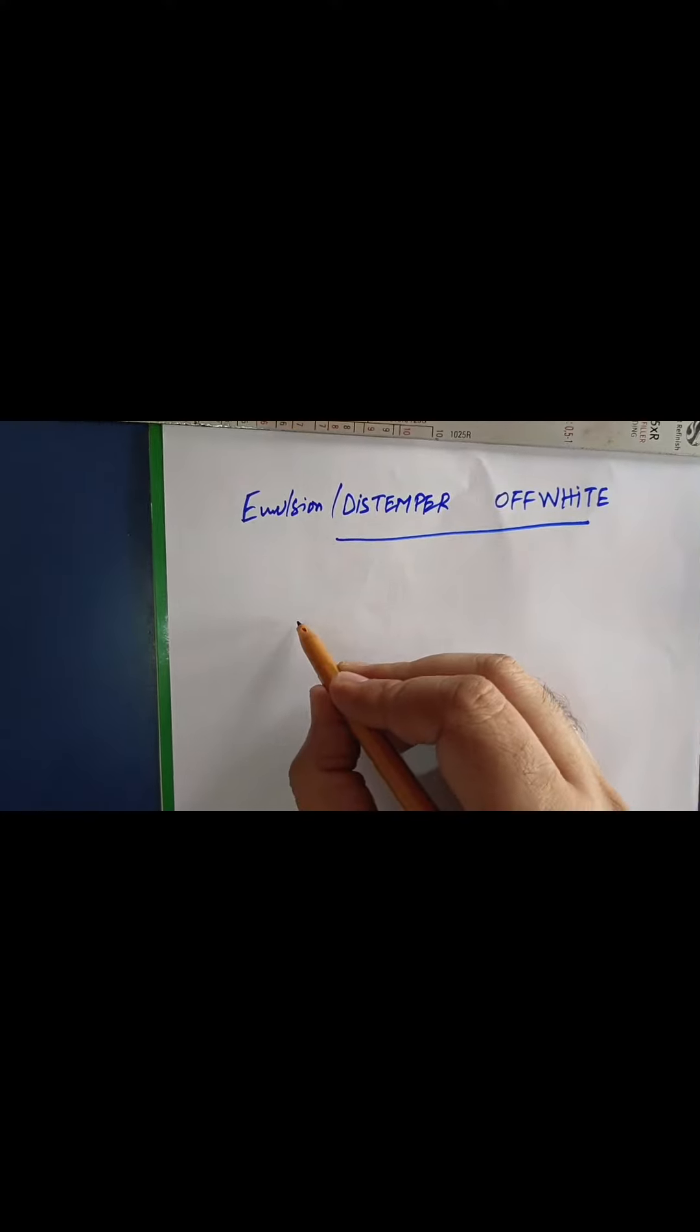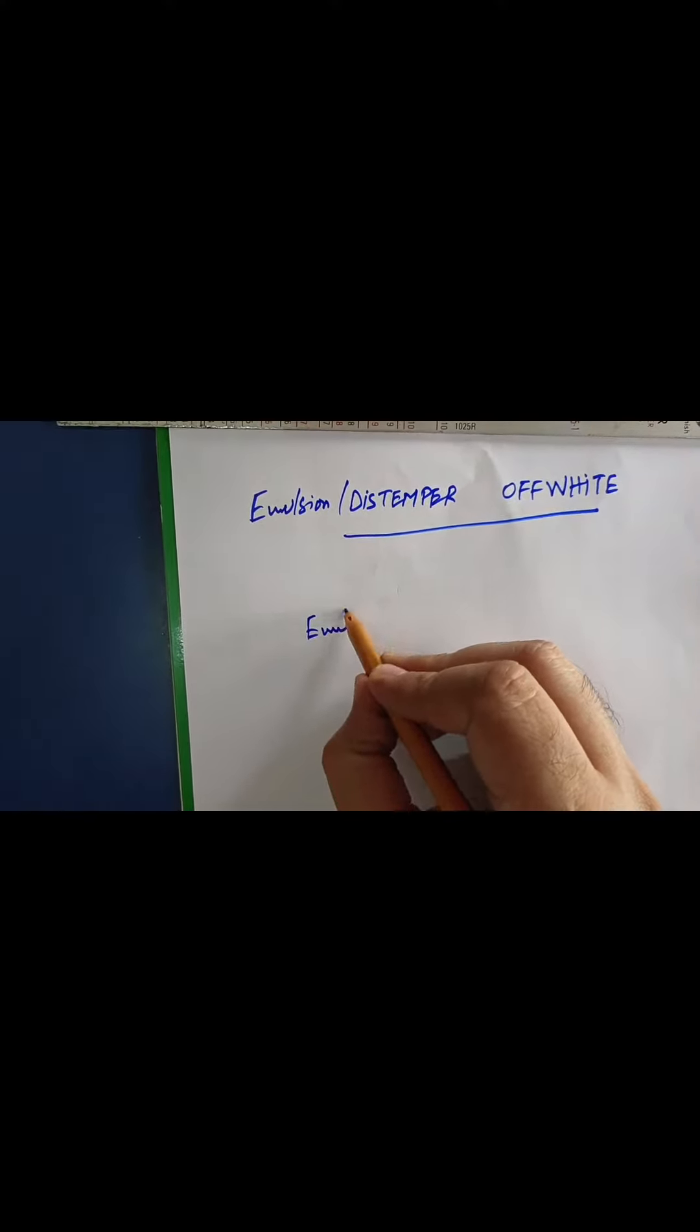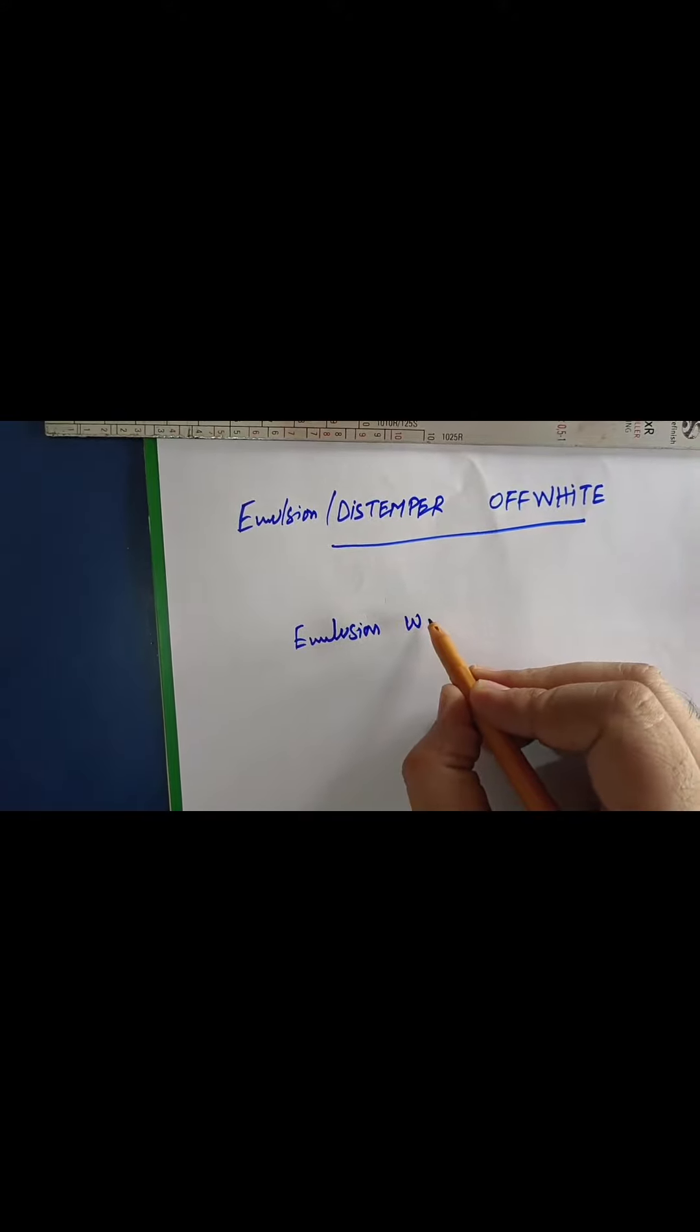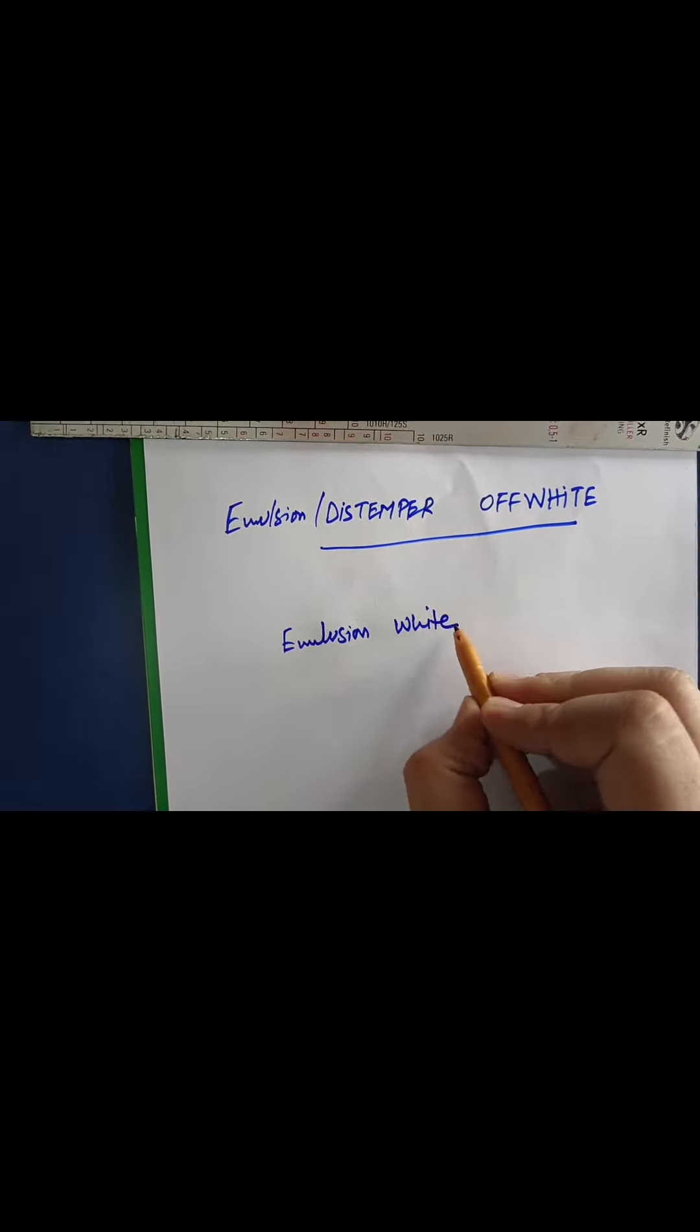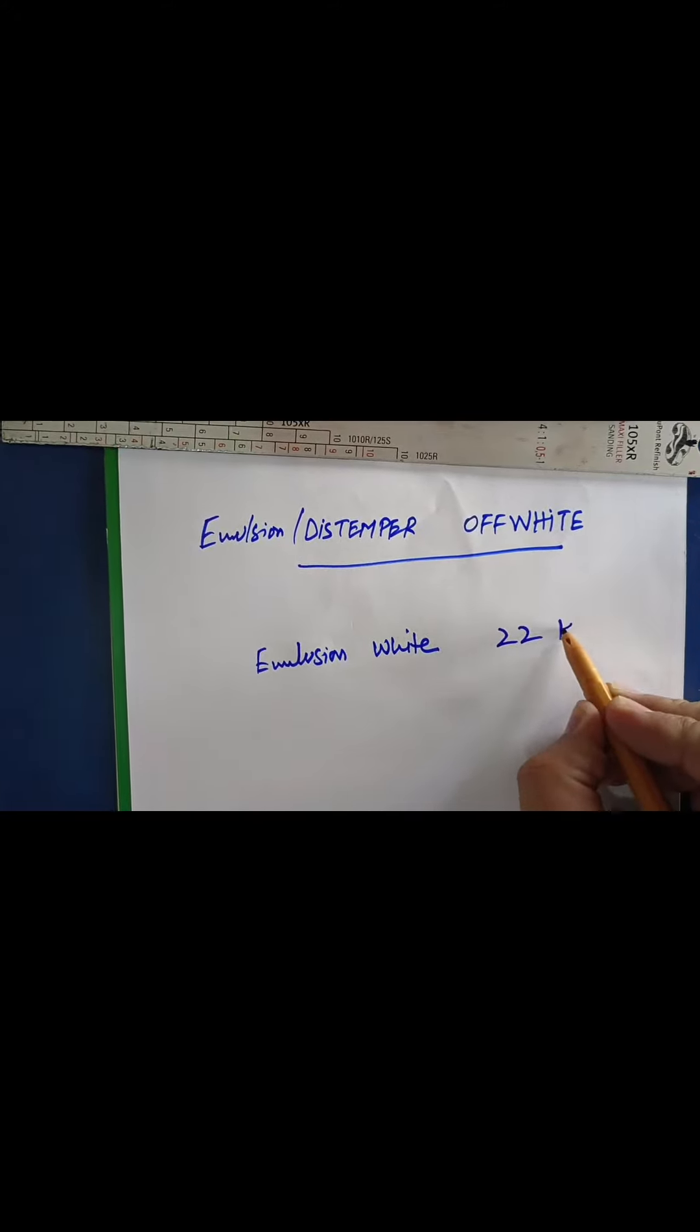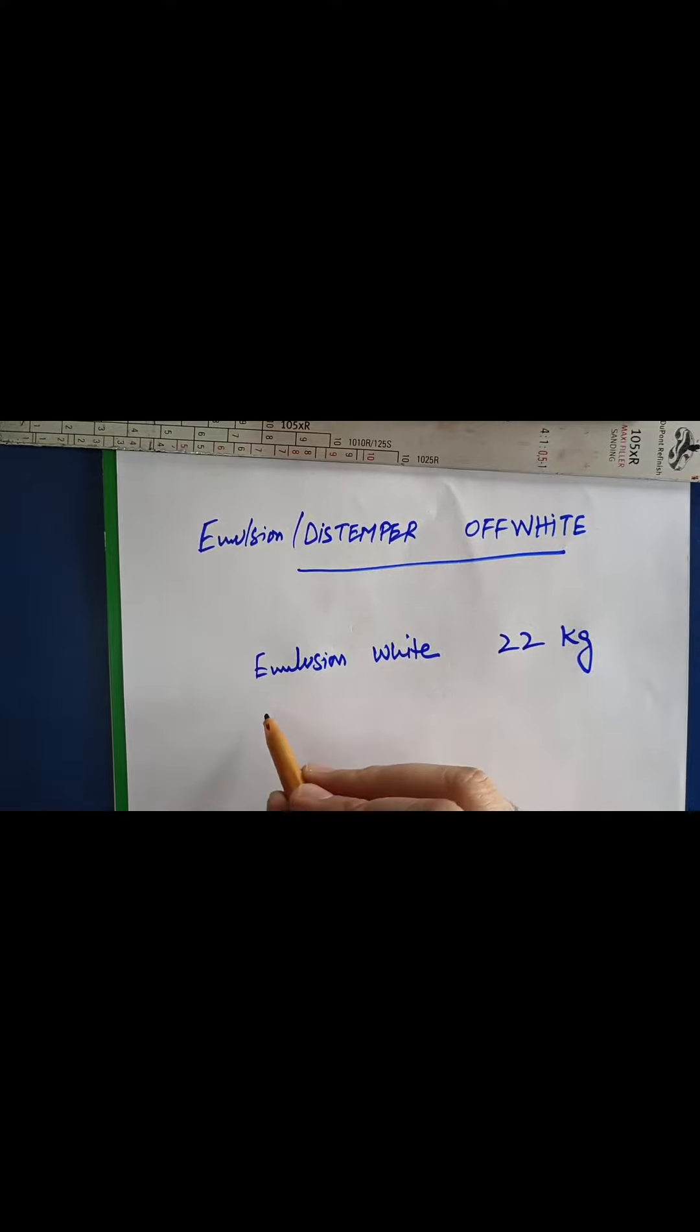Now I tell you the ingredients used. First, we take the white emulsion or distemper, 22 kg. In 22 kg weight, we will use 30 grams of yellow oxide.